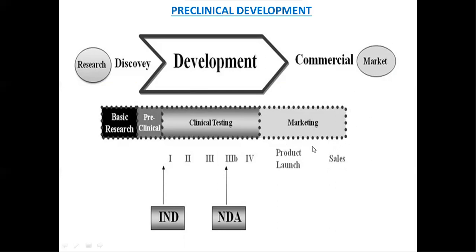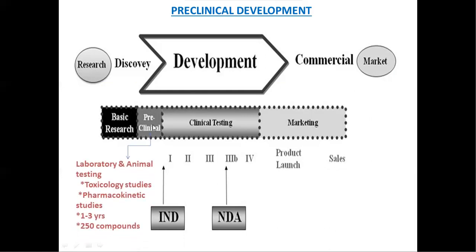After completion of clinical trials, the drug is marketed. In pre-clinical development, laboratory and animal testing procedures are conducted, including toxicological studies and pharmacokinetic studies. This is conducted over around one to three years, and more than 250 compounds are tested on various animals. A huge number of text documents, images, drawings, and photographs are generated, making document control very difficult — and this is where TIMS plays a crucial role.